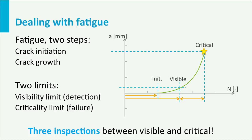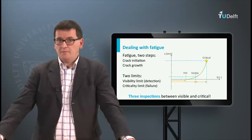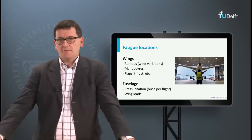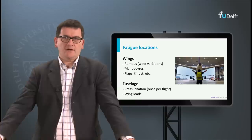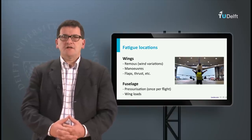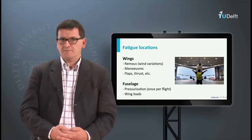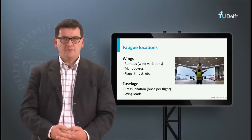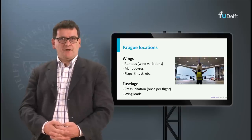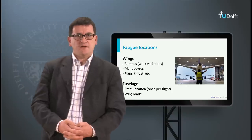To prevent failure we need to inspect the component frequently. Once a crack is discovered we need to repair it. In the ideal case the component is inspected several times before the crack becomes critical. It would be too time consuming to inspect all stress concentration locations regularly, so only specific locations of the aircraft are inspected — identified based on the type of loads, the design of the components, and the applied materials. Typical loads which may induce fatigue include wing loads and maneuvers, forces introduced by flaps or engines, and for the fuselage the pressurization cycle is very important, as well as loads transferred by the wings and the tail section.